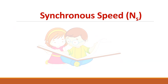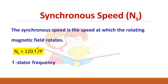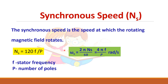The rotating magnetic field runs at synchronous speed Ns, given by 120F/P, where F is the supply frequency and P is the number of poles. Ns is in RPM; it can also be written in radians per second as omega_s. Remember both formulas as they are needed for calculations.